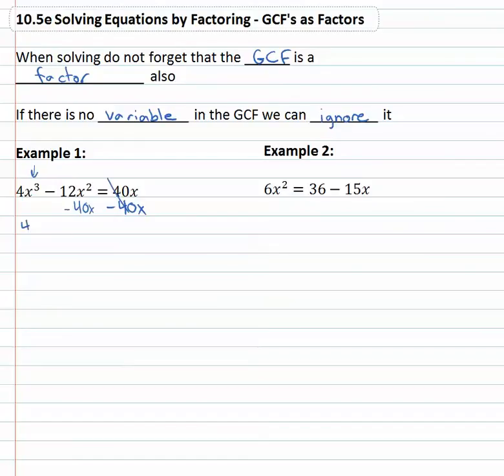No like terms, so we have 4x³ - 12x² - 40x = 0. Again, don't forget the equals zero. And now when factoring, the first thing we always look for is always the GCF.